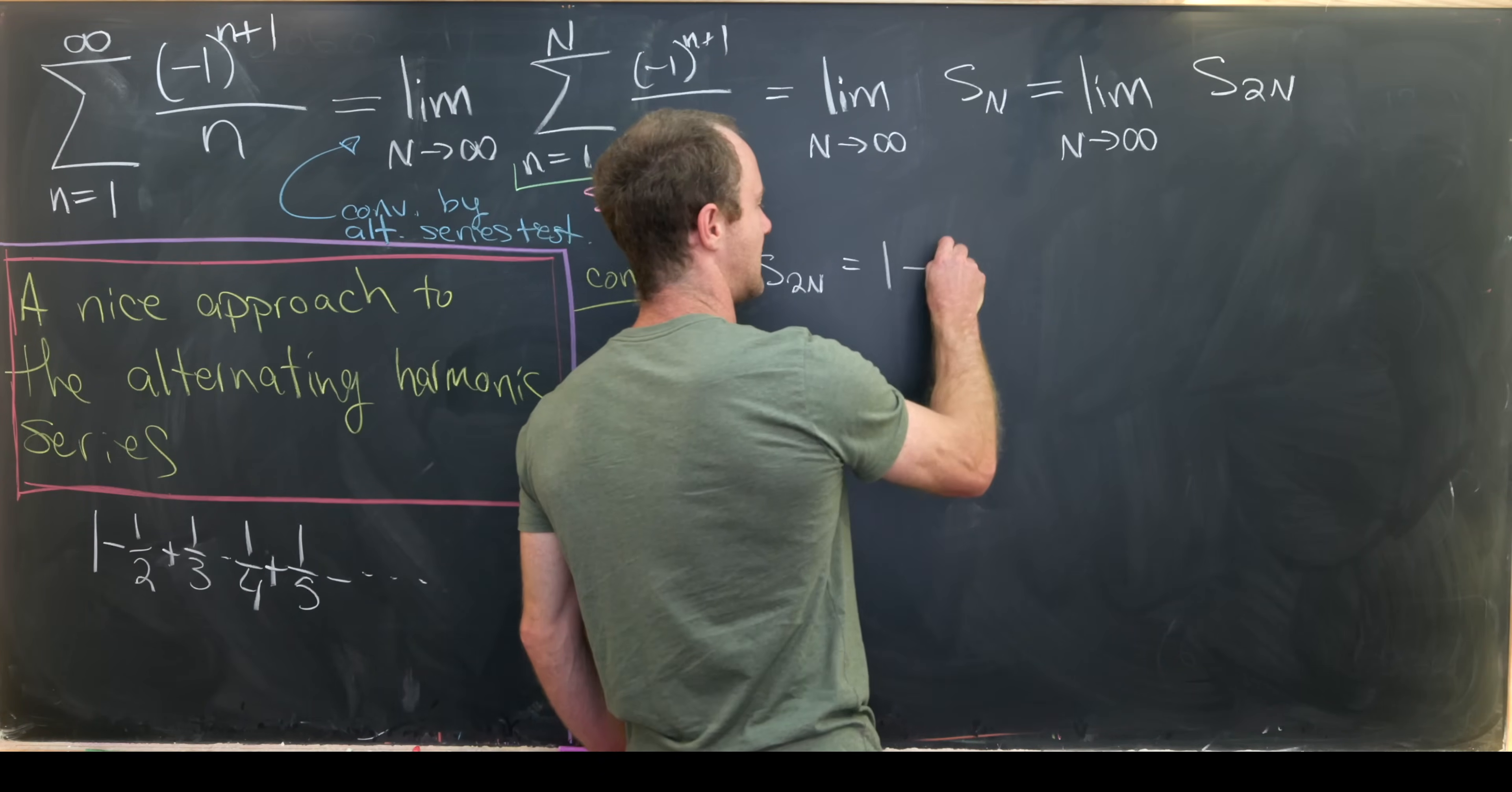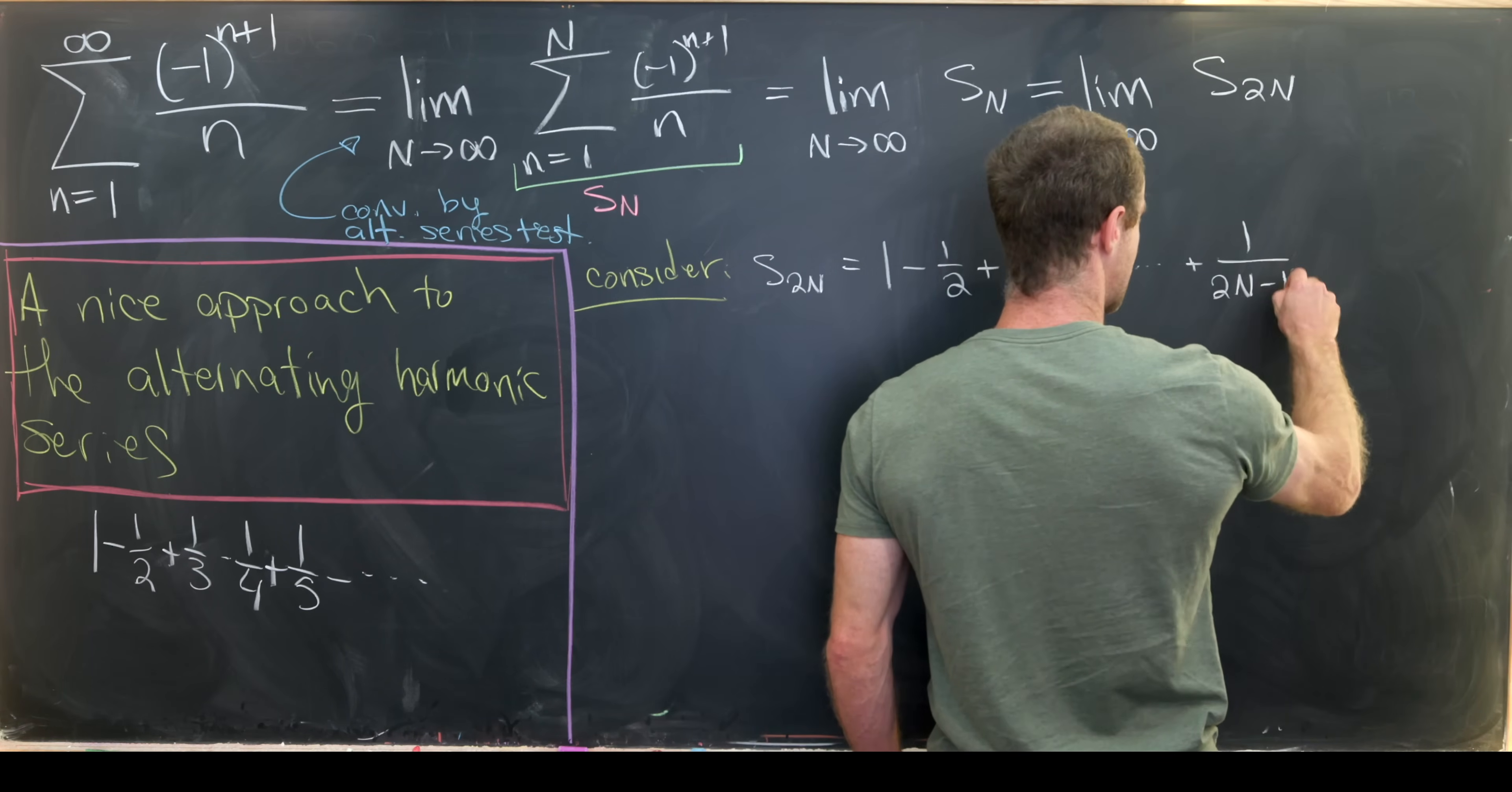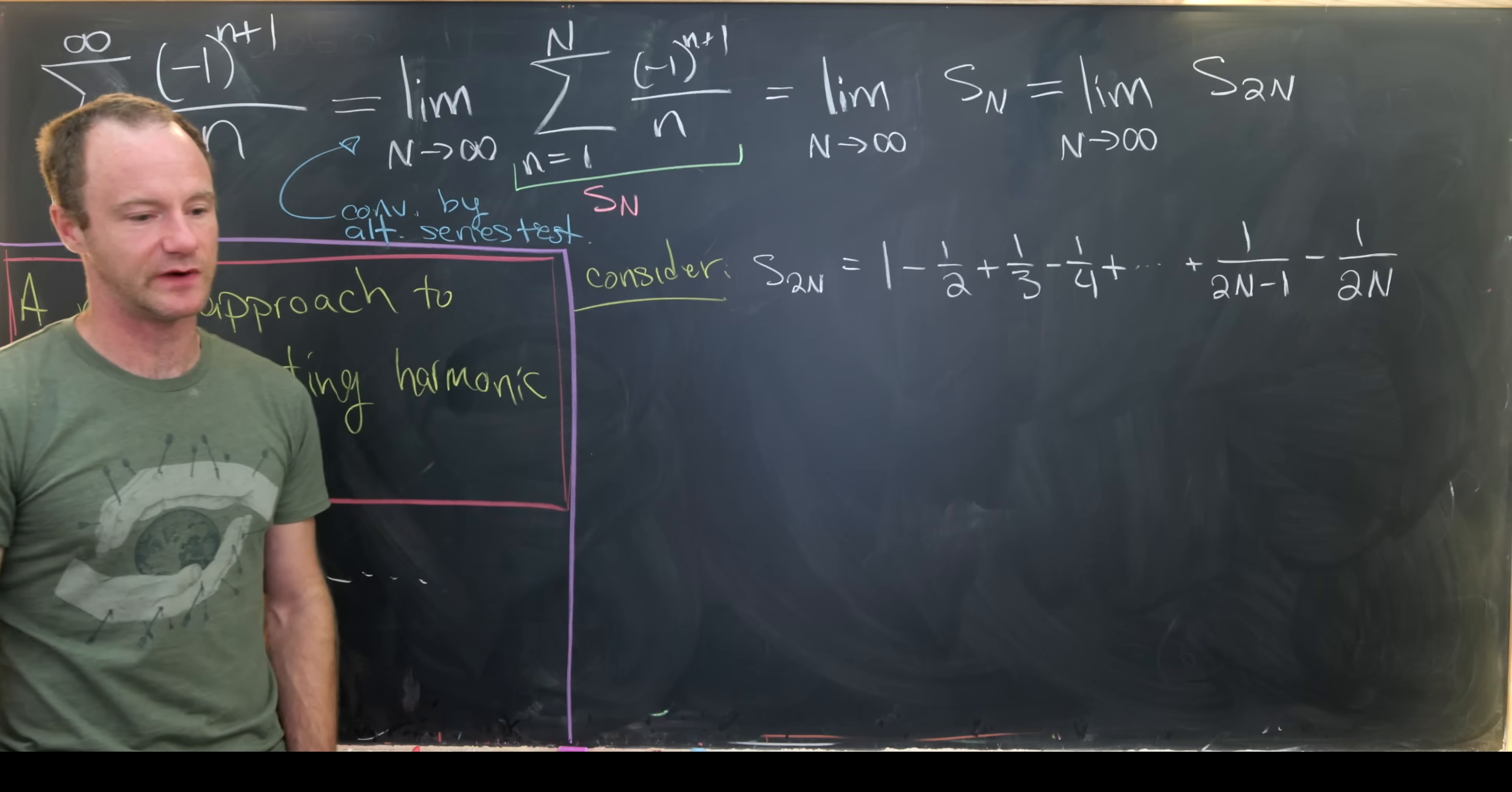And then put that back into the limit of our partial sum. So this is going to be 1 minus 1/2 plus 1/3 minus 1/4 plus dot dot dot all the way up plus 1/(2N-1) minus 1/(2N). So everything with an odd denominator is attached to a plus. And everything with an even denominator is attached to a minus.